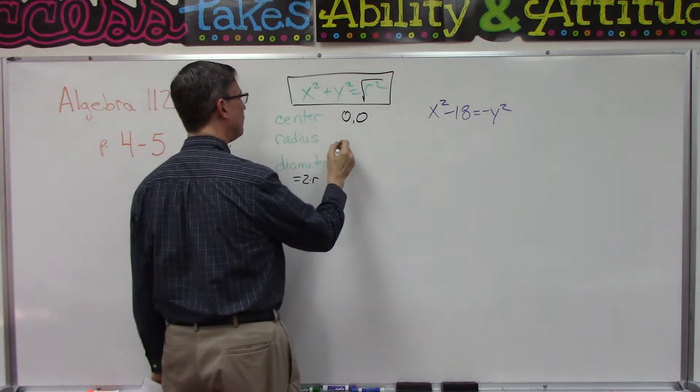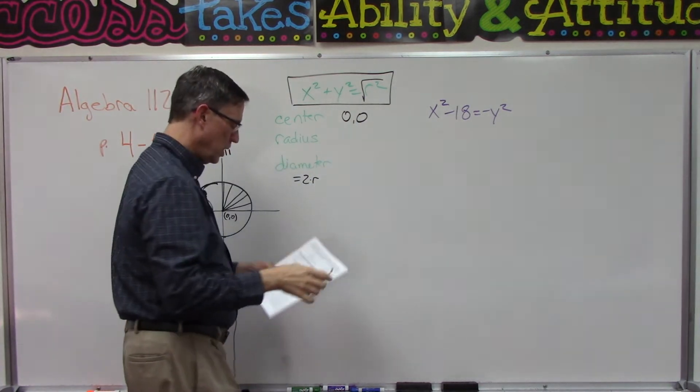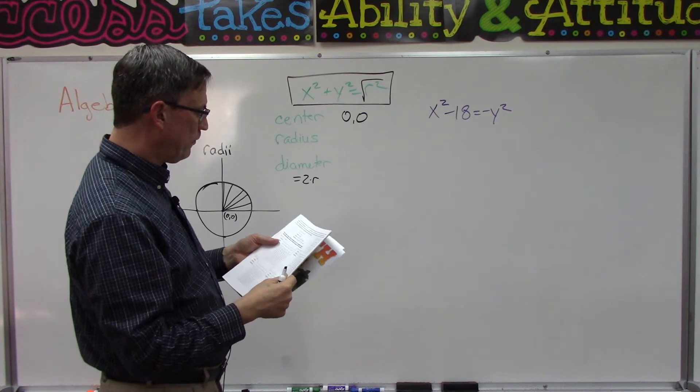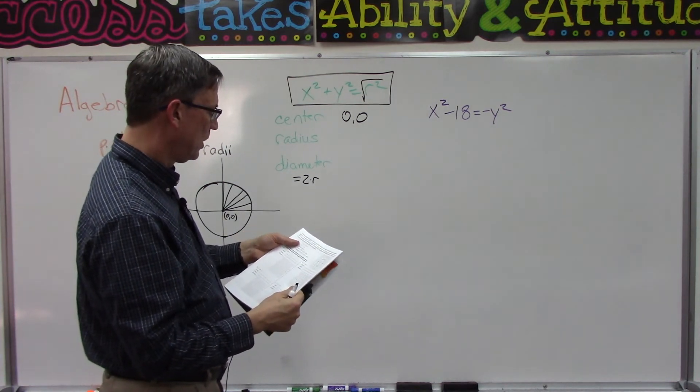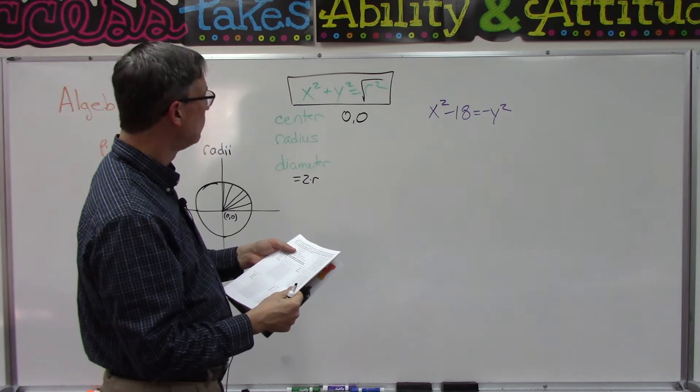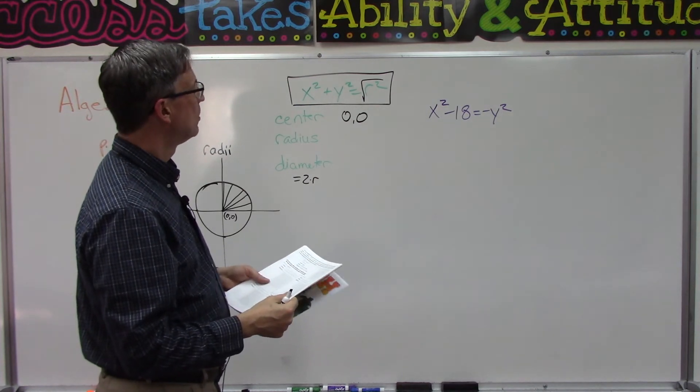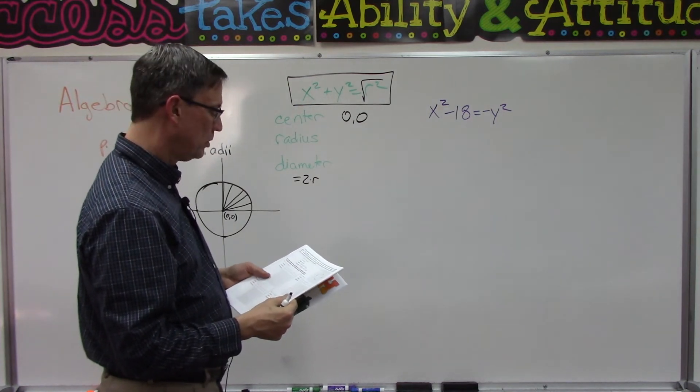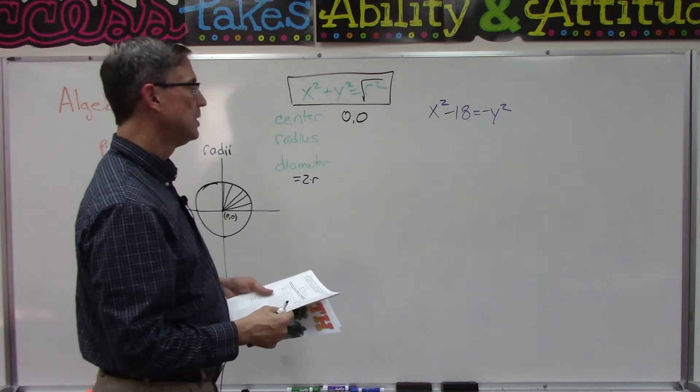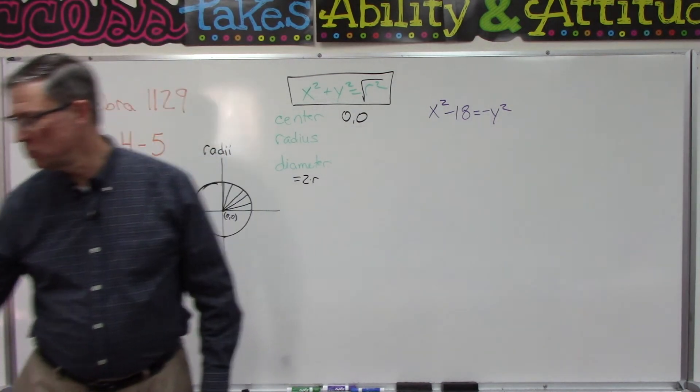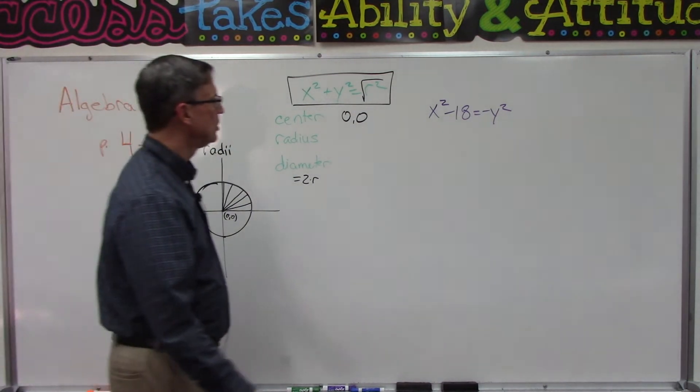The radius is going to be the square root of whatever this number is. So in the pace here at the top of page 5, they show one where x squared plus y squared equals 12. Then we would just use our calculator and do the square root of 12, which works out to be 3.46.